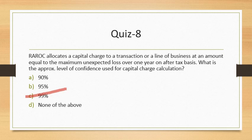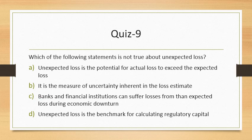Question 9: Which statement is not true about unexpected loss? Unexpected loss is the potential for actual loss to exceed expected loss — true. It is a measure of uncertainty inherent in a loss estimate — true. Banks can suffer losses more than expected loss during economic downturns — true. However, 'unexpected loss is the benchmark for calculating regulatory capital' is not correct. So the answer is D.